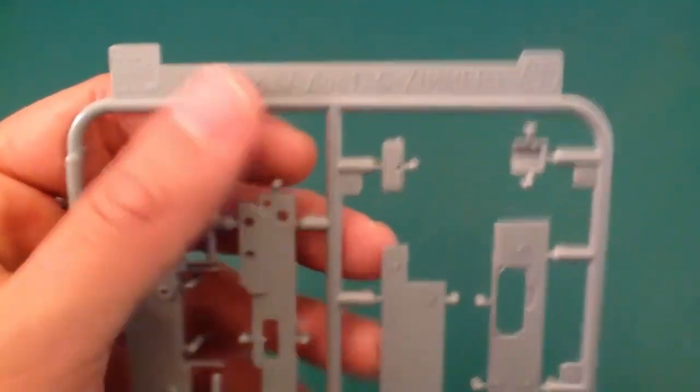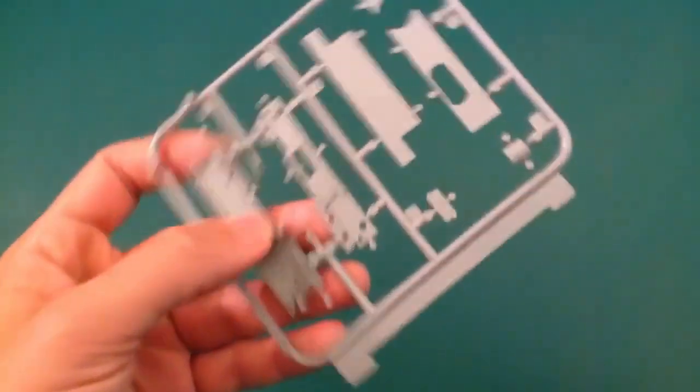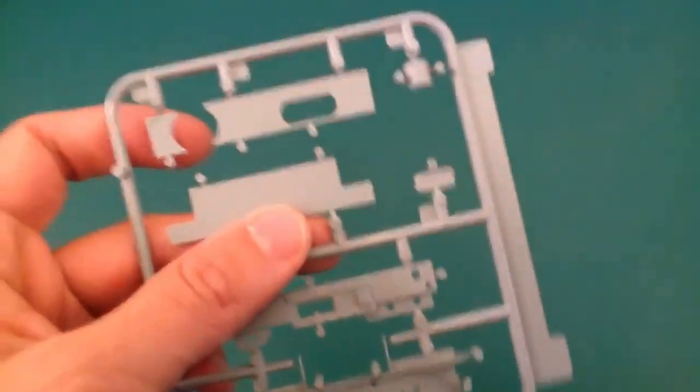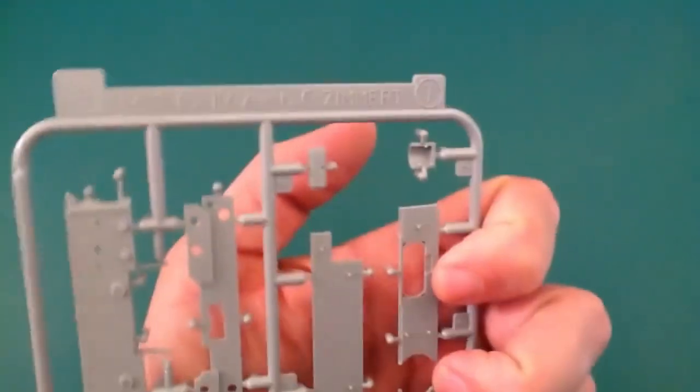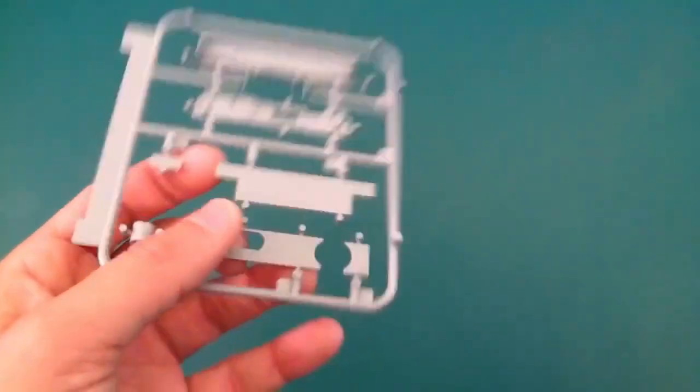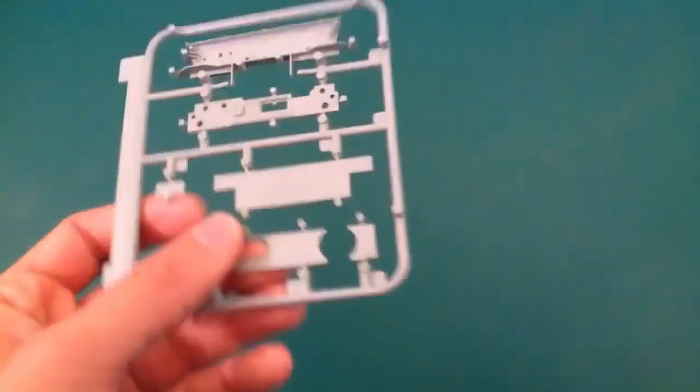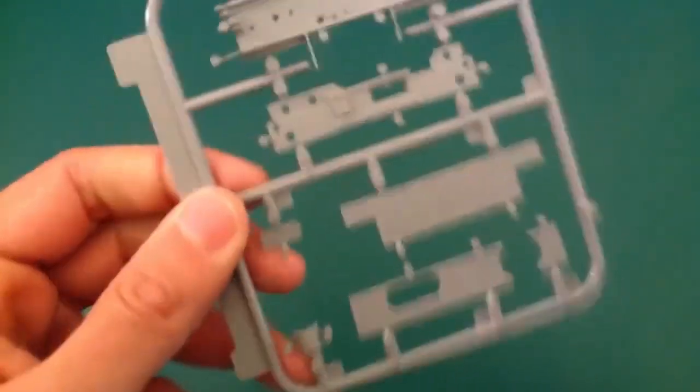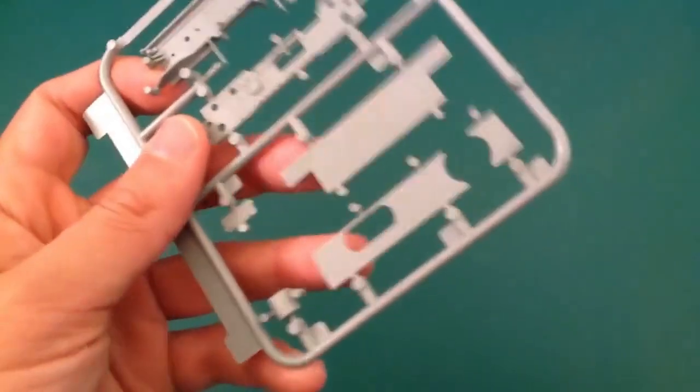Panzer IV G with Zim. So I've got a few Zimeritted Panzer IV parts. This is add-on armor with Zimmerit on it. A little bit shallower, I feel, than the other stuff. But specifically for the Panzer IV G, which is what this kit is basically. It's a G converted to a Brumbar, so that makes a lot of sense. Very nice. There's a few rear parts and a few up-armored front parts. Interesting little sprue.